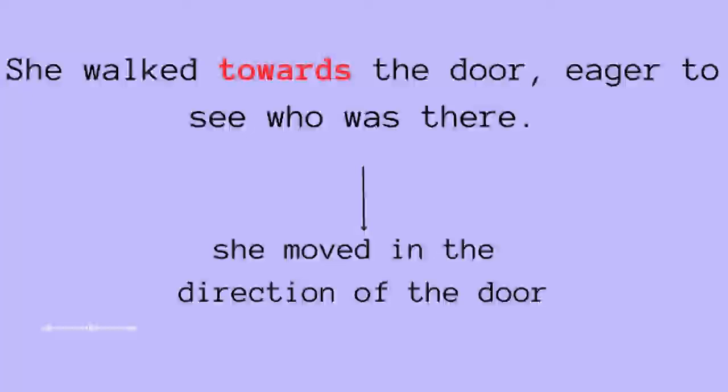And in this case, we use toward. She walked towards the door. That means she decided to walk in the direction of the door. Things like that. So is everything okay?